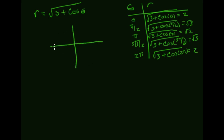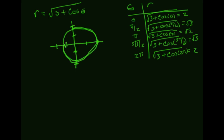Interpreting that in a graph: when theta is zero I'm out at two, when theta is at pi over two I'm at the square root of three, which is between one and two, closer to two. When I'm at pi, I'm at the square root of two — that's also between one and two but closer to one. Three pi over two is going to have me between one and two closer to two, and then I return to the starting point. So I'm getting something that looks roughly like a slightly distorted circle.